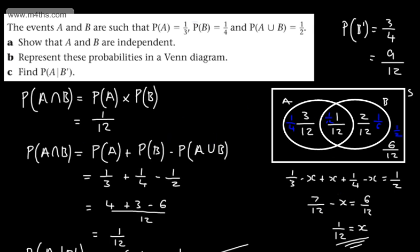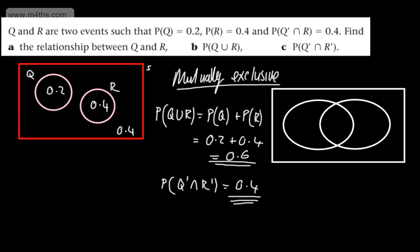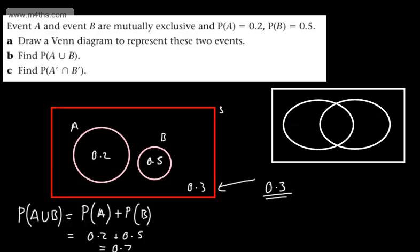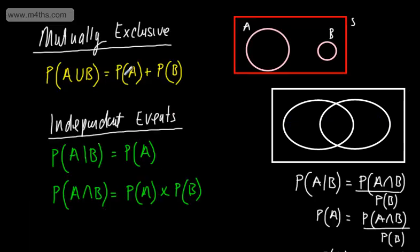Just remember the key formulae: for mutually exclusive events, the probability of A union B equals the probability of A plus the probability of B. For independent events, the probability of A given B equals the probability of A, and the probability of A intersection B equals the probability of A multiplied by the probability of B.